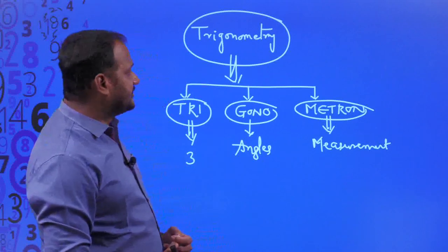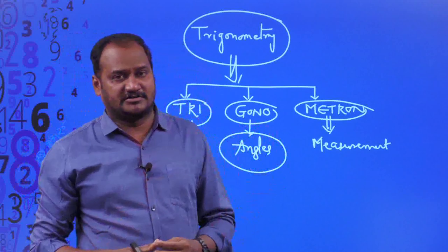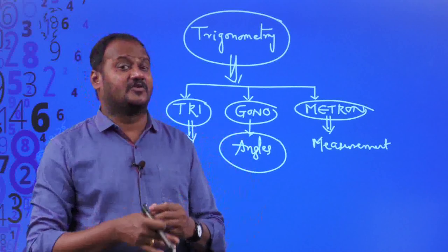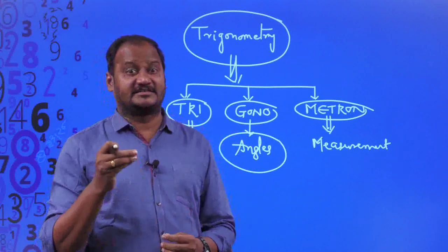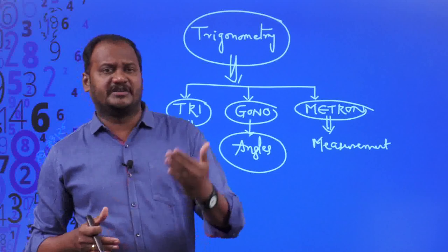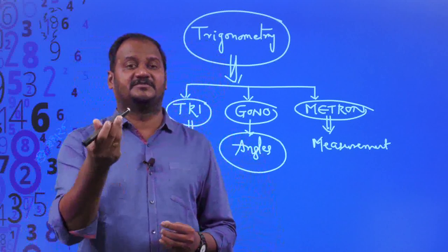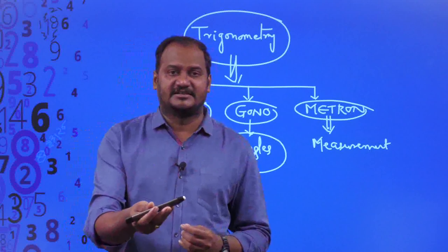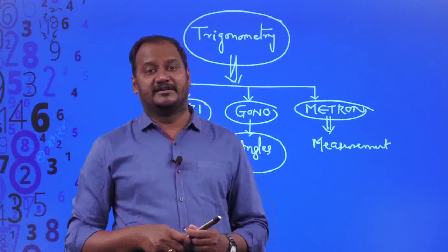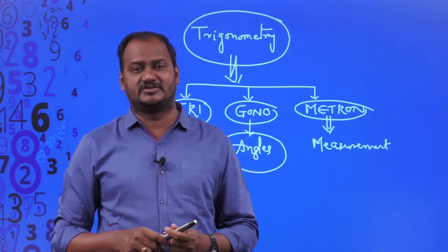Before we enter into trigonometry, what is the measurement of an angle? For example, if I walk 10 kilometers, then the distance I walk is 10 kilometers — distance can be measured in centimeters, meters, or kilometers. Similarly, the weight of an object can be measured in grams, and a liquid can be measured in milliliters or liters. There are different units of measurement for each quantity — but what is the unit of measurement of an angle?